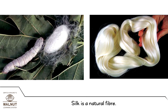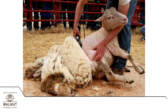Silk comes from the silkworm, which is an animal. So silk is a natural fabric too. Wool comes from sheep, so woolen cloth can be said to be a natural fabric too.